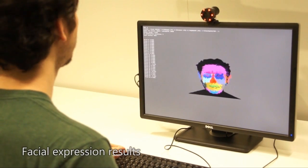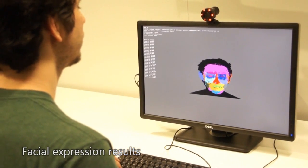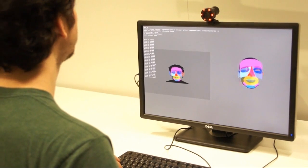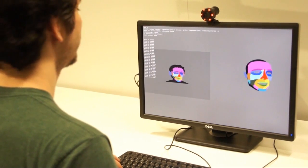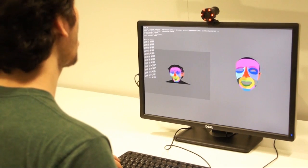Given the accuracy of our depth estimation algorithm, we can plug into existing components that work from depth maps. For example, here we can apply facial part classification and expression detection for controlling an avatar.